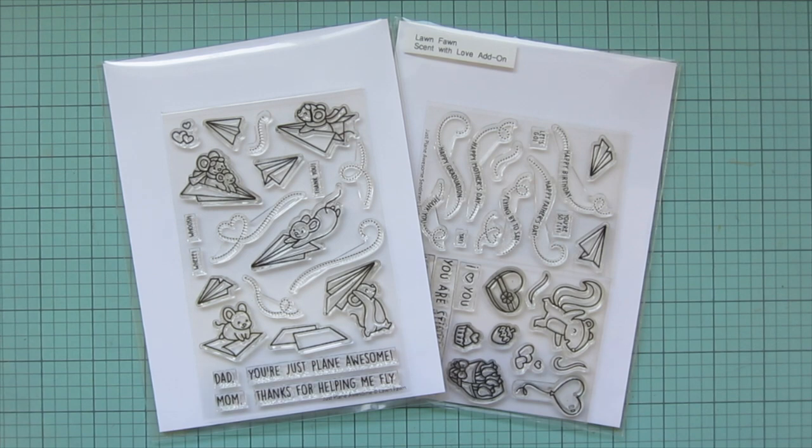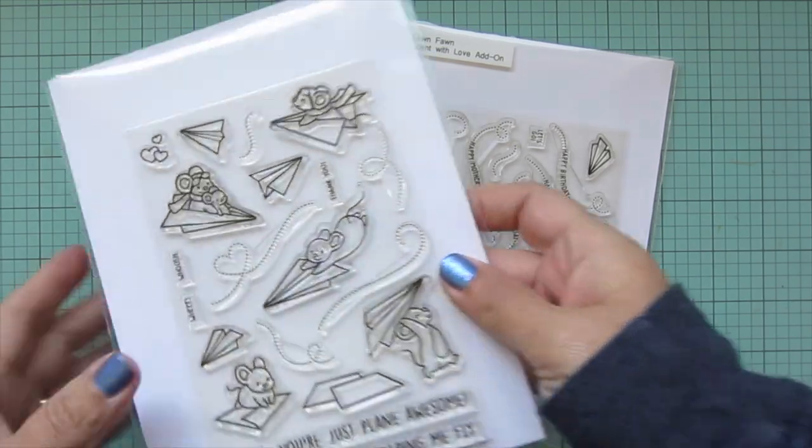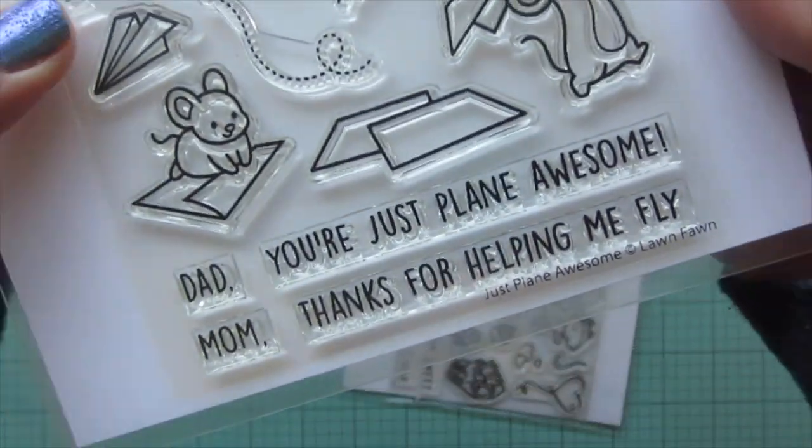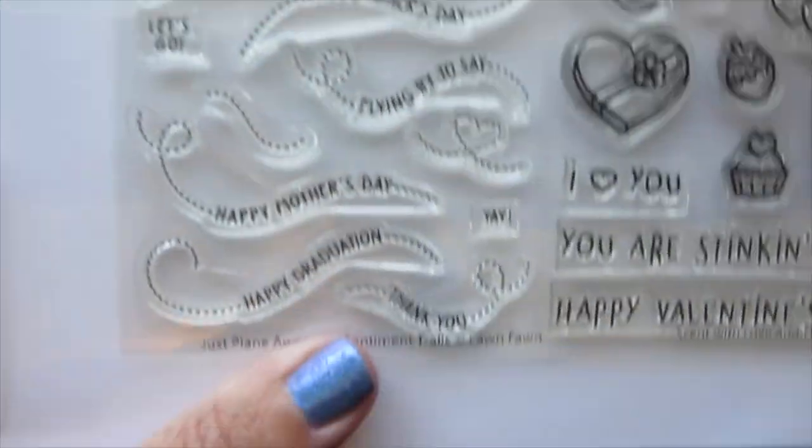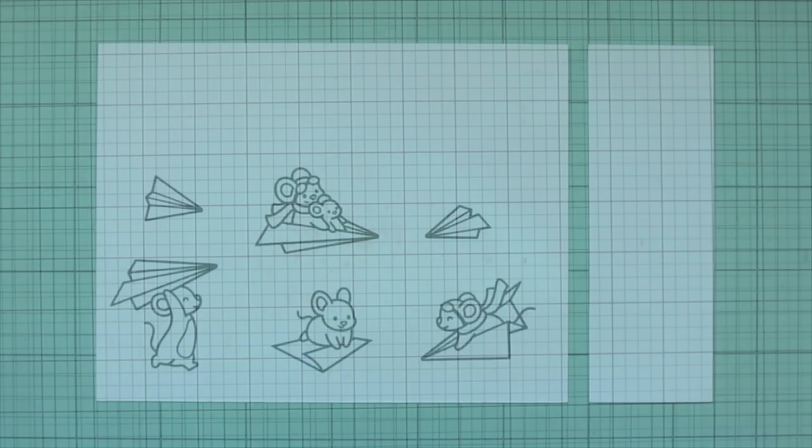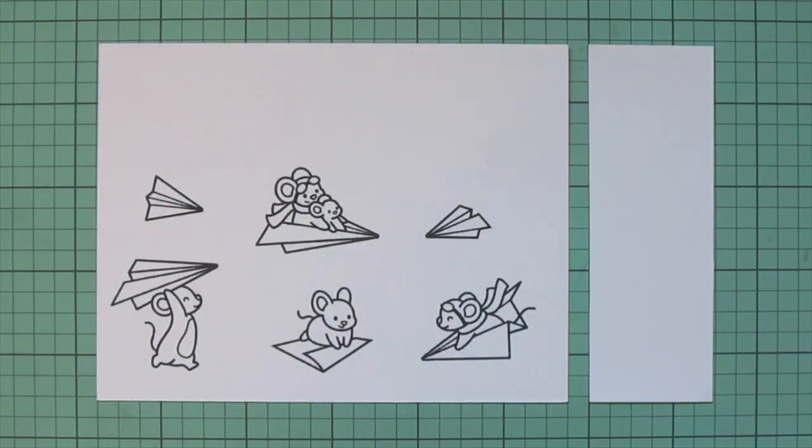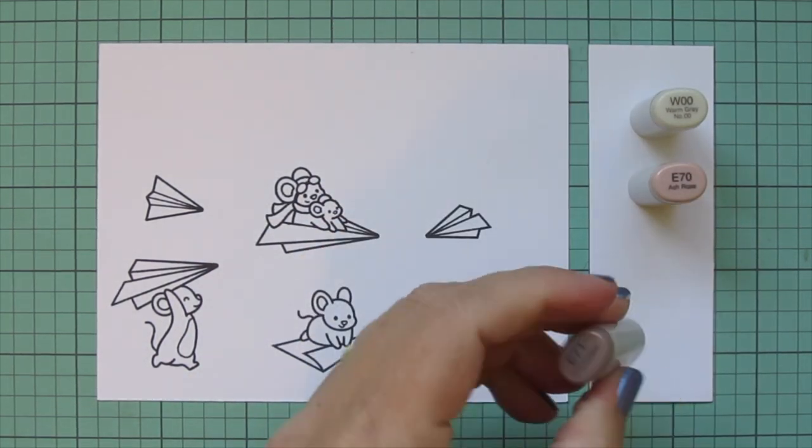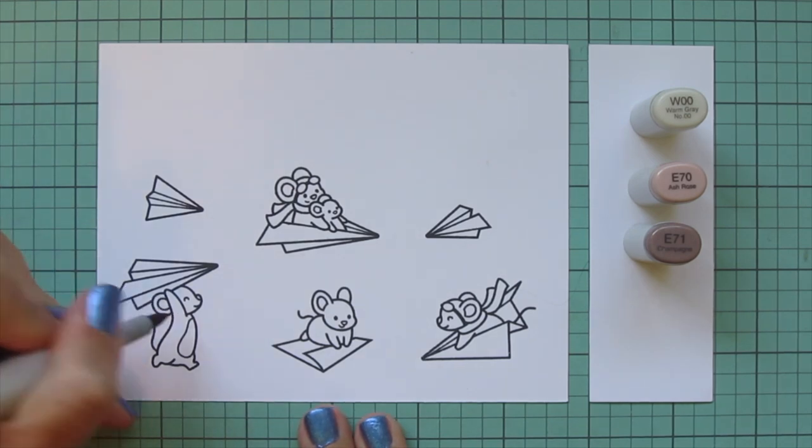Hey friends, it's Christy. Welcome back to my channel. Today I'm going to be making a card using the brand new Just Plain Awesome and Just Plain Awesome Sentiment Trails from Lawn Fawn. I have stamped those images out on some Spectrum Noir Ultra Smooth premium white cardstock with Lawn Fawn Jet Black ink and I'll be coloring with my Copic markers.